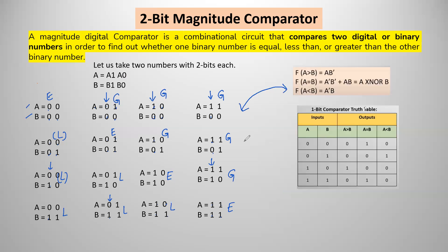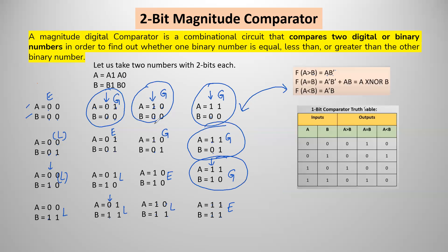Now we relate this logic with boolean functions. For 1-bit comparison, f(a > b) = a·b'. This means a is in normal form and b is in complement form. Looking at all six greater-than combinations, when a=1 and b=0 — directly greater. A is 1 means normal form, b=0 means b'. So for all four such combinations, this satisfies the condition a·b'. Based on these logics, we write the expression for a greater than b as a·b' for one-bit comparison.